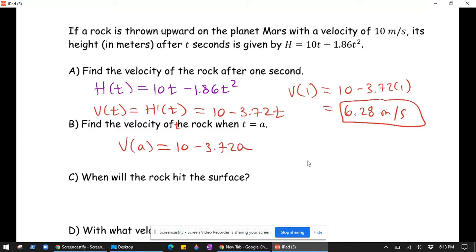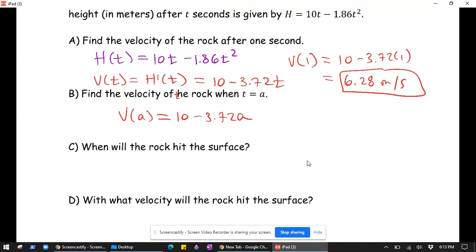When will the rock hit the surface? The rock's going to hit the surface when the height is 0. So we want to set the height equal to 0. When h of t equals 0, that implies that we want 10t minus 1.86t squared to equal 0.